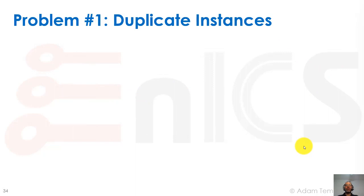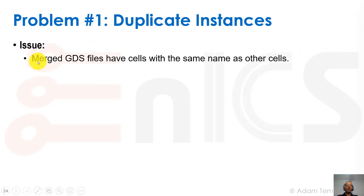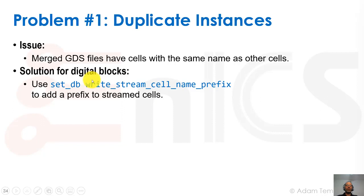Now we'll discuss some things that can happen during extraction where we need to change things in our run set file. Problem number one: duplicate instances in the GDS file. The issue is that merged GDS files may have cells named the same as other cells. For digital blocks, it's easy to fix: we saw there's a db option inside Innovus. Using set db write_stream_cell_name_prefix with a prefix such as my_block will add this prefix to each structure inside the GDS, so we shouldn't have any duplicates.